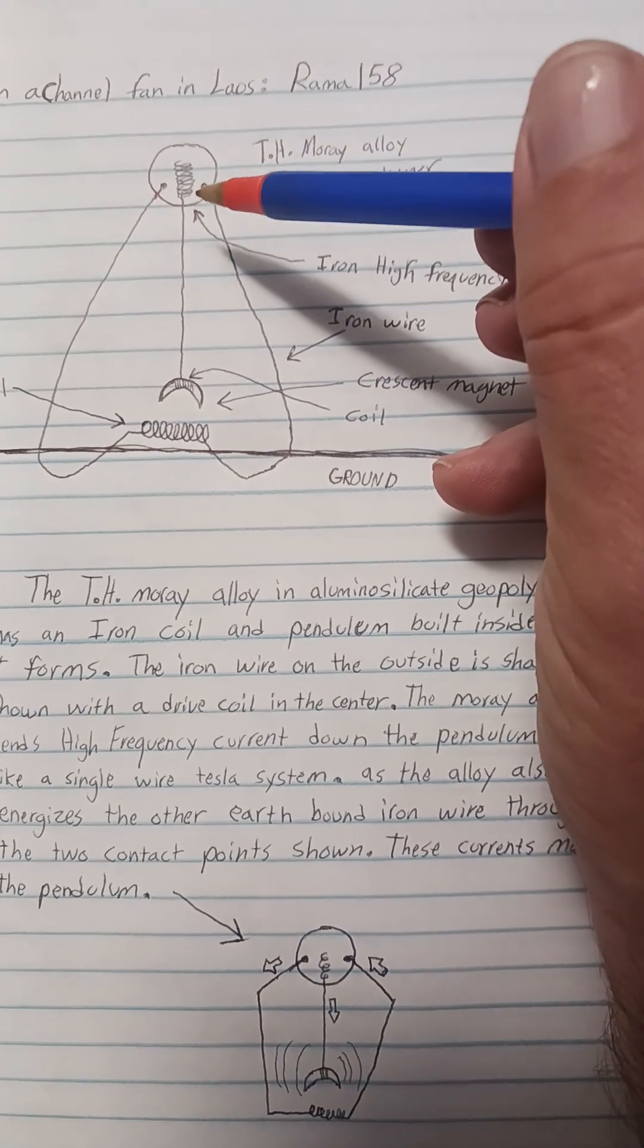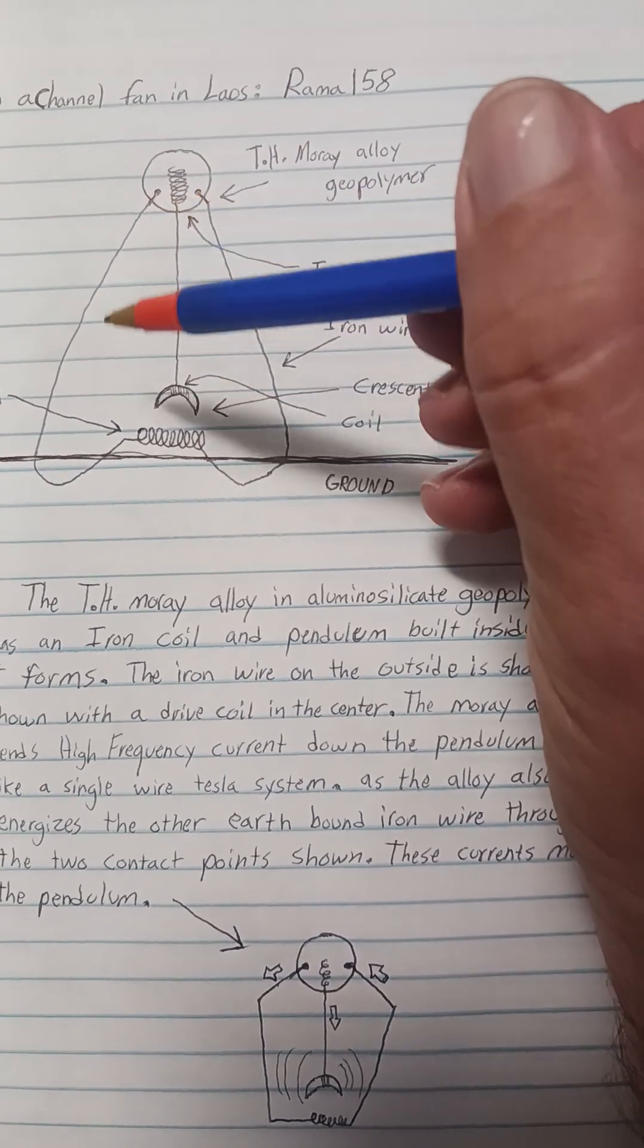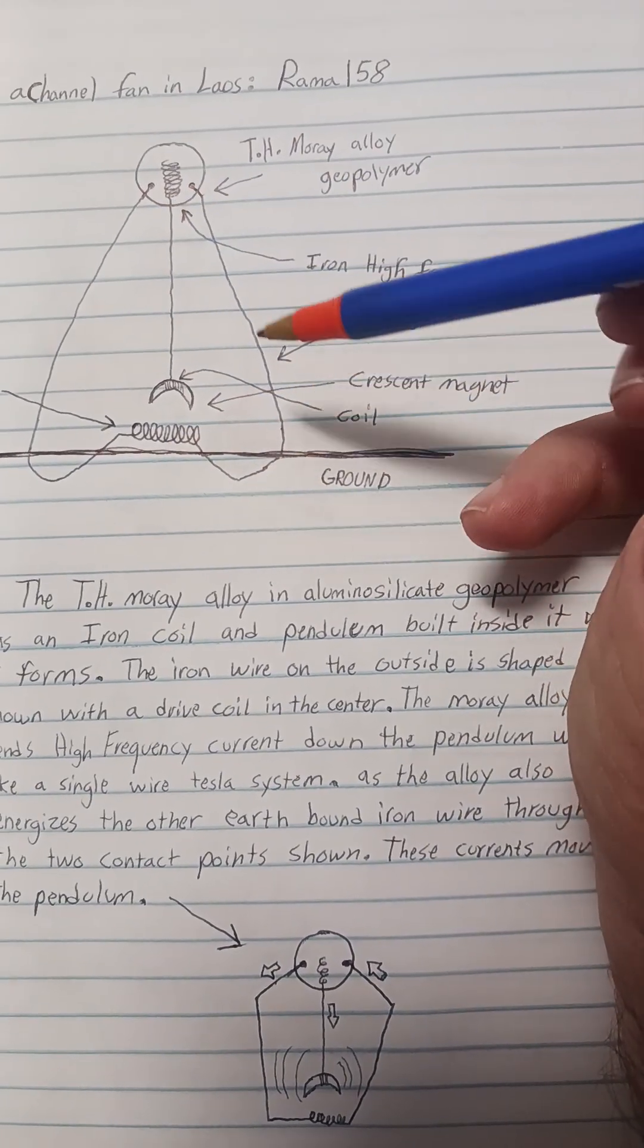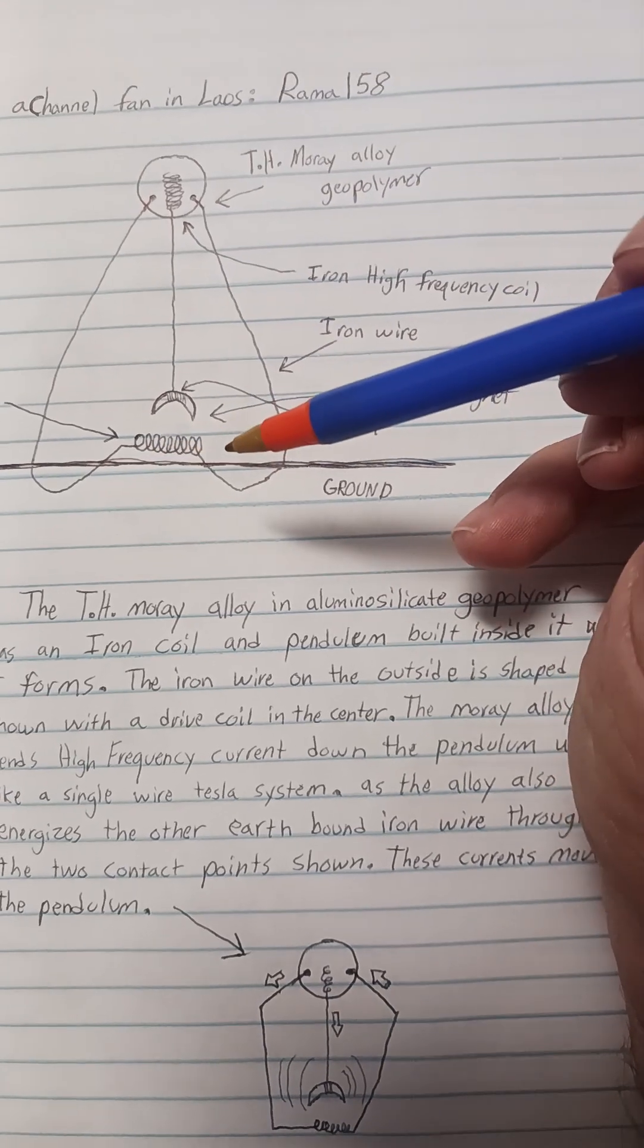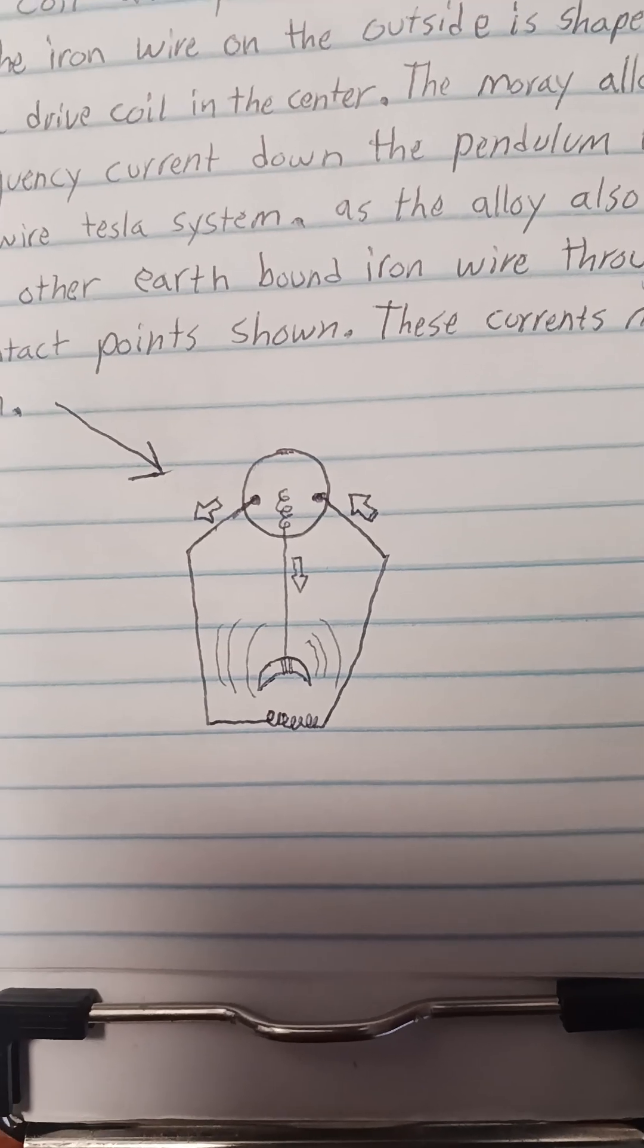So this part here acts as a Tesla single wire system delivering current to the crescent magnet. This is like a regular two-wire that's grounded. The currents flow and they drive the pendulum motor. Looks sort of like this picture here.